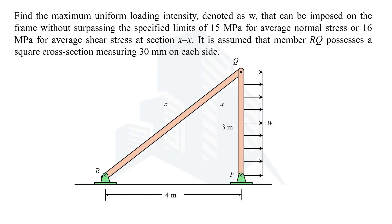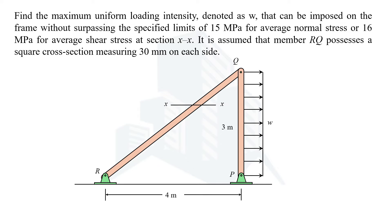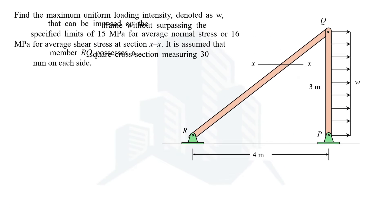Hello everyone. In this video we are going to solve an example where we are asked to calculate the maximum uniform loading acting on the PQ member. We have been given a normal stress of 50 MPa and shear stress of 60 MPa at section XX of member RQ.